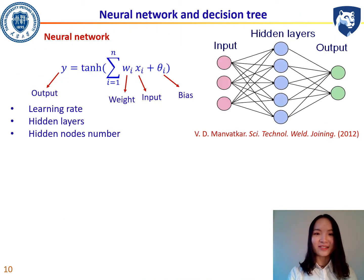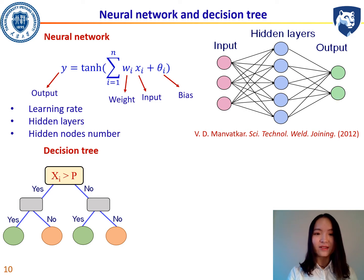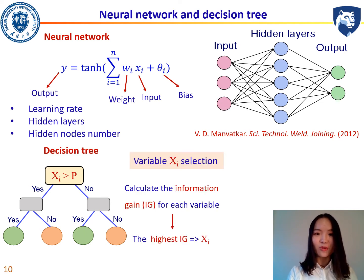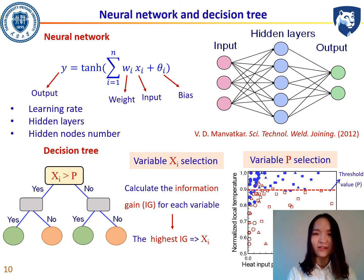For machine learning, we used two algorithms. The first is a neural network using the arctangent function as the activation function; the learning rate, hidden layers, and hidden nodes per layer are adjusted based on the dataset. The second algorithm is a decision tree, where the basic structure is: if xi is greater than threshold p, go left; if not, go right. We select the variable xi with the highest information gain from among the six computed variables. The threshold p is chosen as the value that gives the minimum classification error.